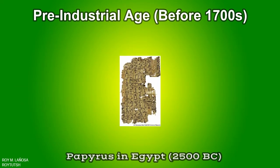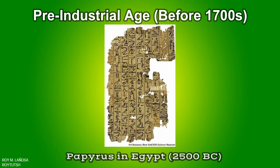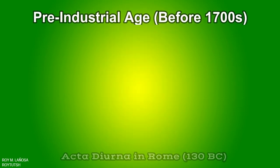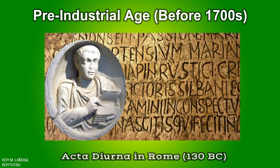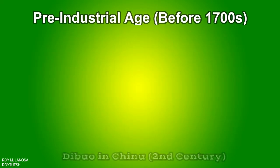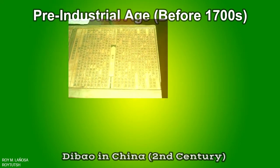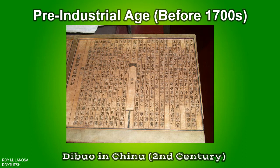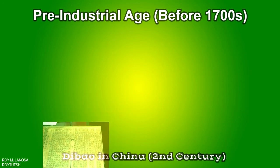Papyrus is a material similar to thick paper used in ancient times as a writing surface. It was made from the pith of the papyrus plant, Cyperus papyrus, a wetland sedge. Acta Diurna were daily Roman official notices — a sort of daily gazette — carved on stone or metal and presented on message boards in public places like the forum in Rome. Dibao were reports from official residences, a type of publication issued by the central and local government in imperial China, the only official government newspaper published by the Chinese central government across different dynasties.